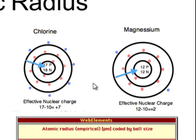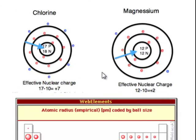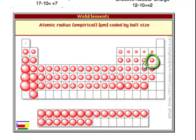A chlorine atom has the same number of inner electrons — 10 inner core electrons — but the nucleus of chlorine has 17 protons, or 17 positive charges. Taking those 17 positive charges and subtracting out the 10 being screened gives 7 effective nuclear charges. So there's a much greater pull on the outermost electrons of chlorine than on those of magnesium, which causes chlorine to be so much smaller than magnesium.